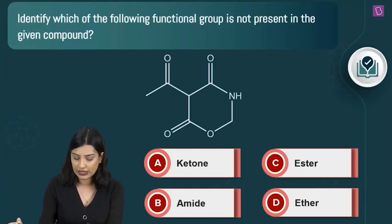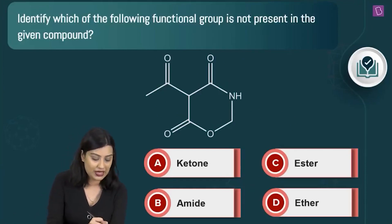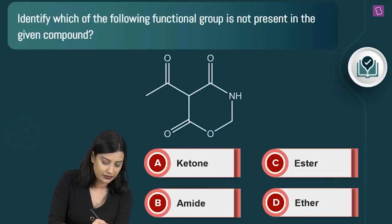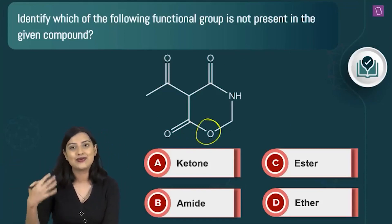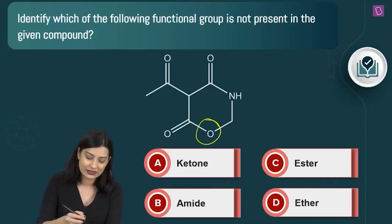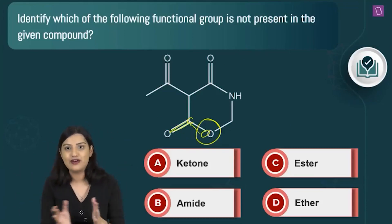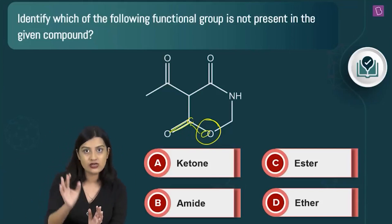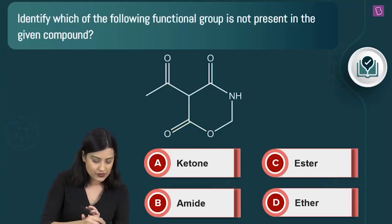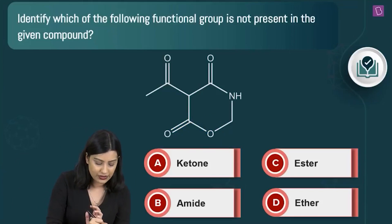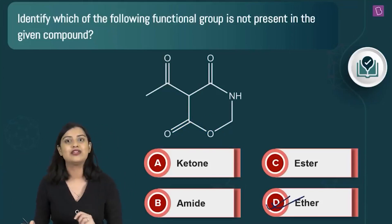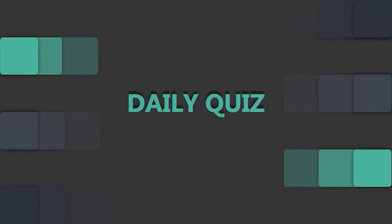Since ketone, amide, and ester are all present, the group not present is ether. Importantly, just because there is a C–O–C linkage does not make it an ether — here the full functional group is C(=O)–O, which is part of the ester. Option D (ether) is the correct answer.